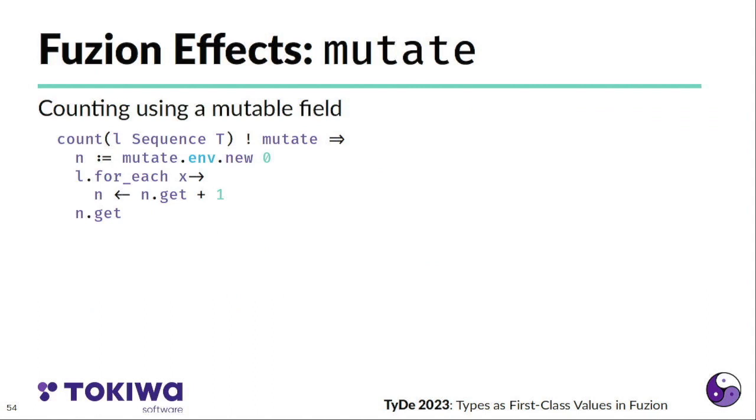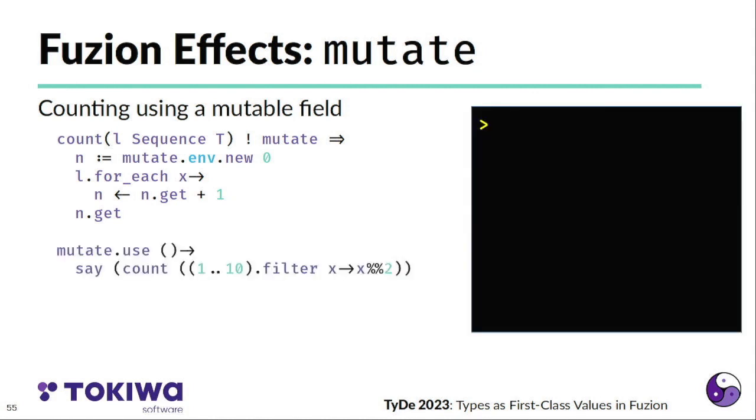So the last example, which is a bit lengthier, I said that fields in Fuzion are immutable. But there is a mutate effect that allows us to create mutable variables. So we use this here in a feature that counts the number of elements in a sequence by creating a mutable field, goes through all the elements, increments that mutable field, and returns the result of this counting. And mutate is the type of this effect. So we need to use that type to access that from the environment. And we also need to document that this function requires the mutate effect.